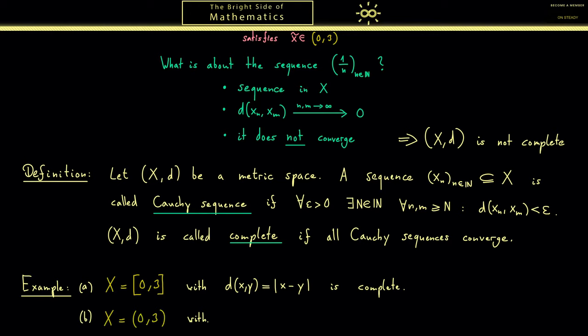Let's first look at another example. Now we don't change the set. We still consider the interval 0 to 3 where we exclude 0 and 3. But now we change the metric and I want to choose the discrete metric. So this is what we defined in part 2 as the discrete metric.